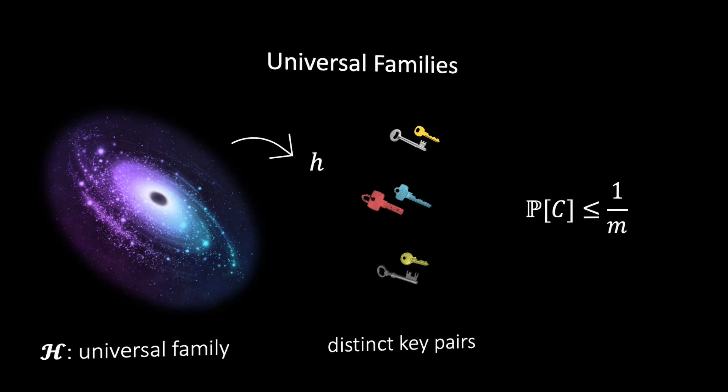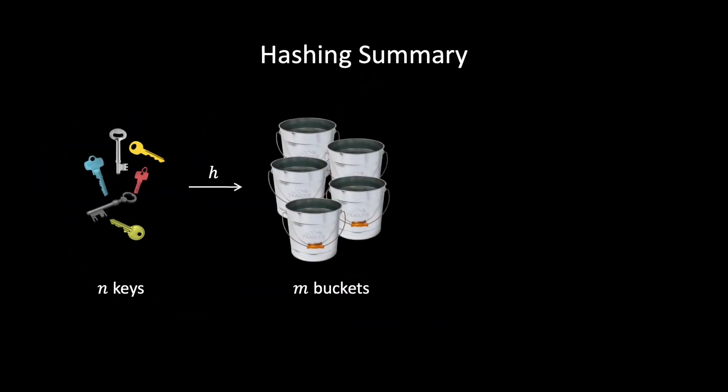In conclusion, we have seen in this video how we can use a hash function to store keys in a hash table. We have also seen that we need to be careful when choosing our hash function in order to avoid collisions, and that if we wanted to have a low probability of collisions using a random hash function, we would need a hash table of size n squared.